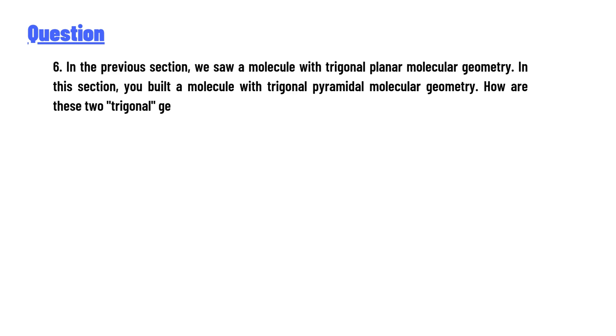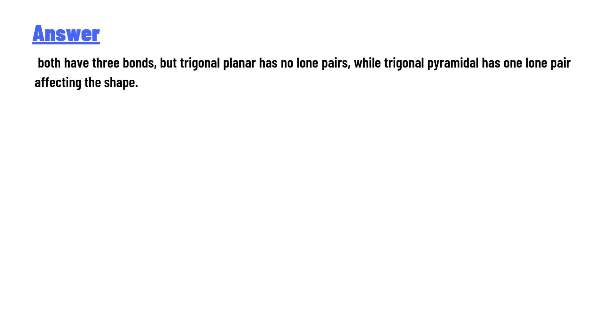The answer to the question is: Both have three bonds, but trigonal planar has no lone pairs and trigonal pyramidal has one lone pair affecting the shape. So that's the correct answer of the question.